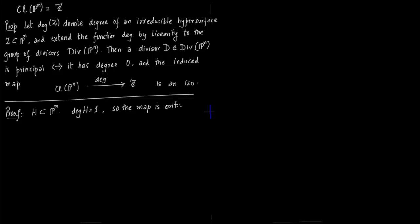You can say the degree map is onto. After all, you can just take this hypersurface and put any integer in front of it. You can get a map to integers. So you just say 2 times hypersurface, 3 times hypersurface and so on. Since degree is 1, the degree map will just give you 2 times 1 or 3 times 1 and so on.